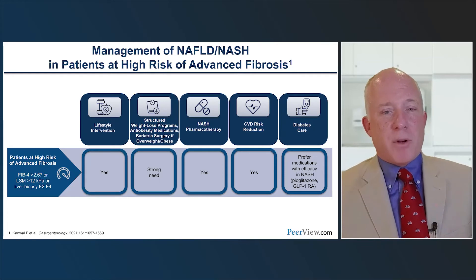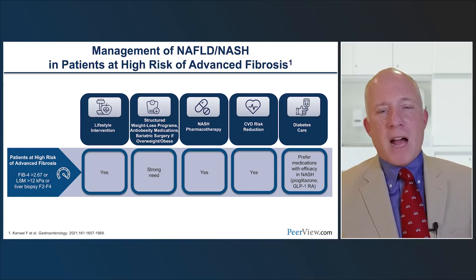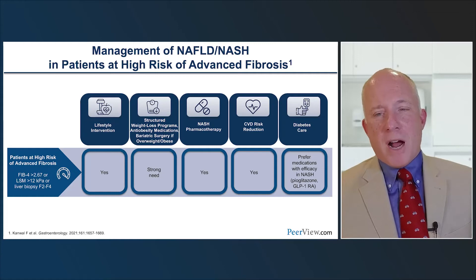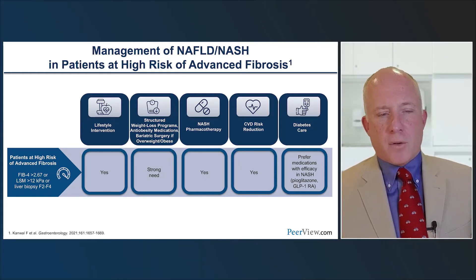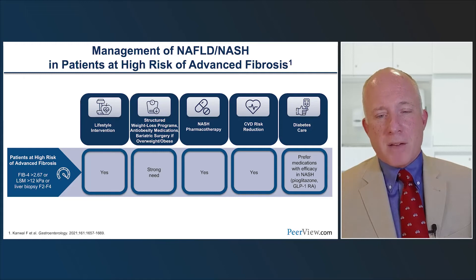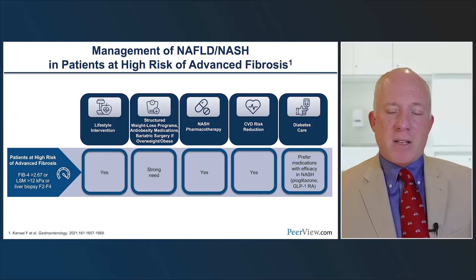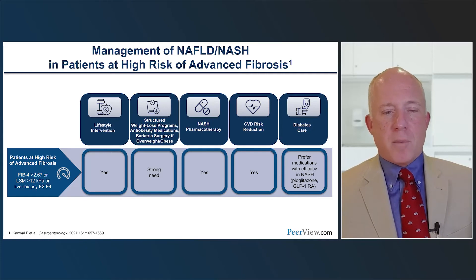For high-risk patients like Ted, those with high FIB4 scores and high liver stiffness measurements have higher risk for advanced fibrosis, cirrhosis, and hepatocellular cancer. In the primary care space, we still recommend all the lifestyle changes and weight loss interventions. But get them to a hepatologist as early as possible so they can access liver-specific therapy. In primary care, consider a more aggressive approach with both pharmacotherapy and metabolic surgery, because time is not our friend in these metabolic conditions.